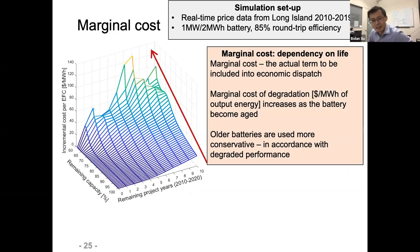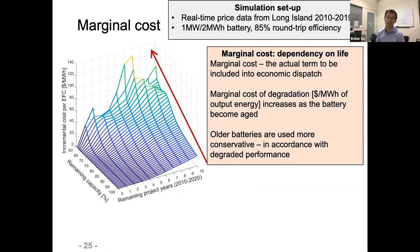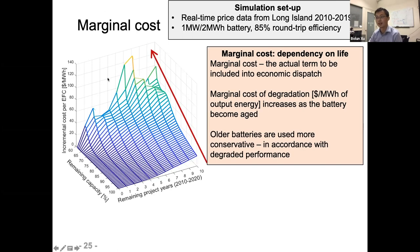Looking at the incremental degradation cost — the marginal cost, which is the derivative of the value surface — this is the actual term to plug into market optimization. It shows a very strong dependency of marginal cost on remaining battery capacity. A new battery has a marginal degradation cost around $0–$20/MWh, but as the battery approaches end of life the marginal cost jumps to five- or even ten-fold — up to over $100/MWh — and also becomes more sensitive to price dynamics.